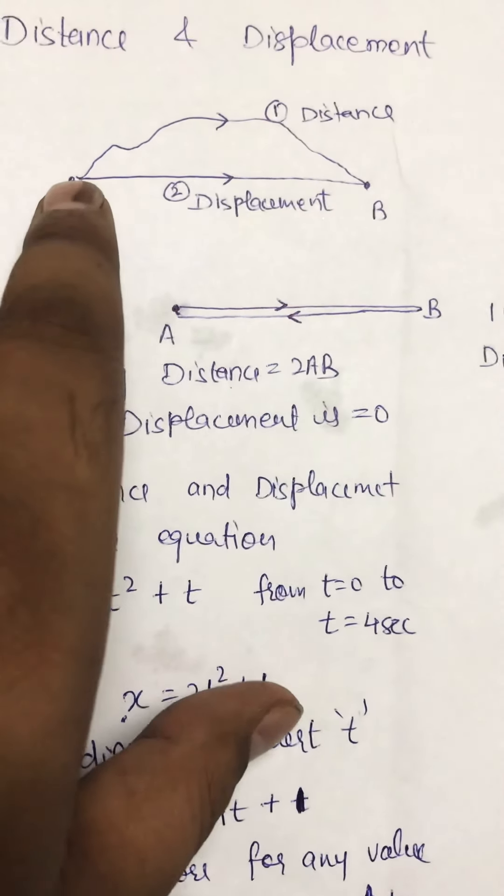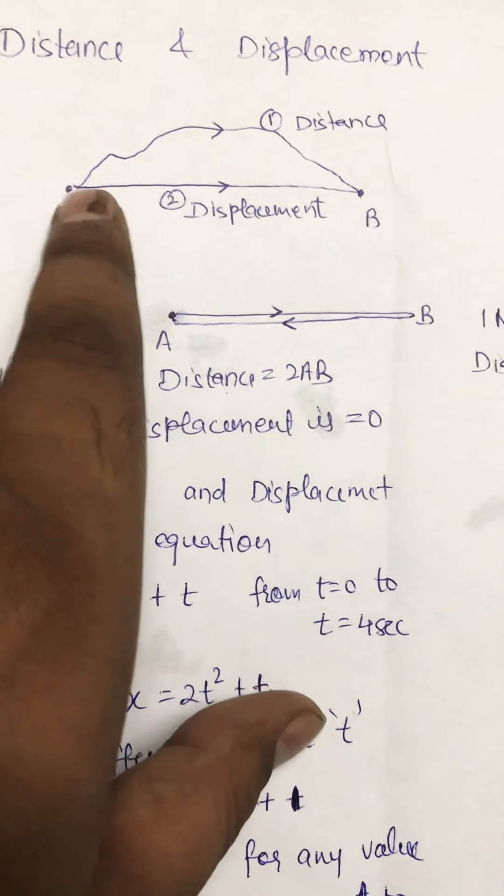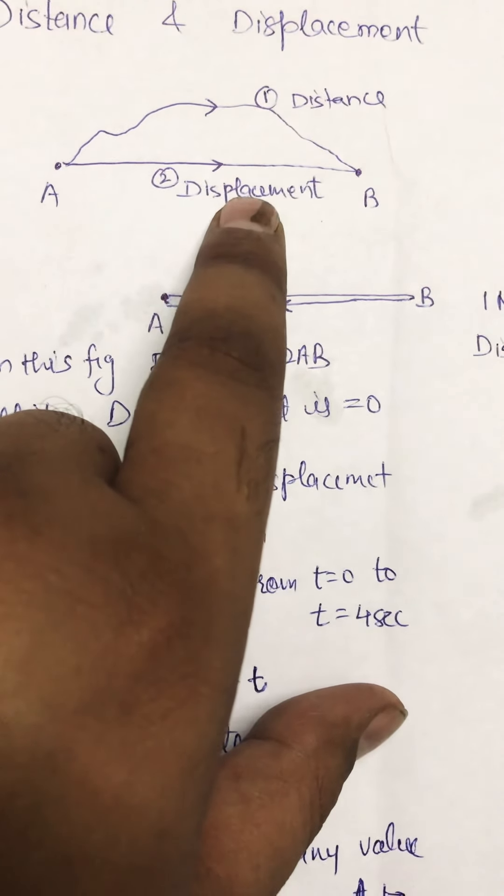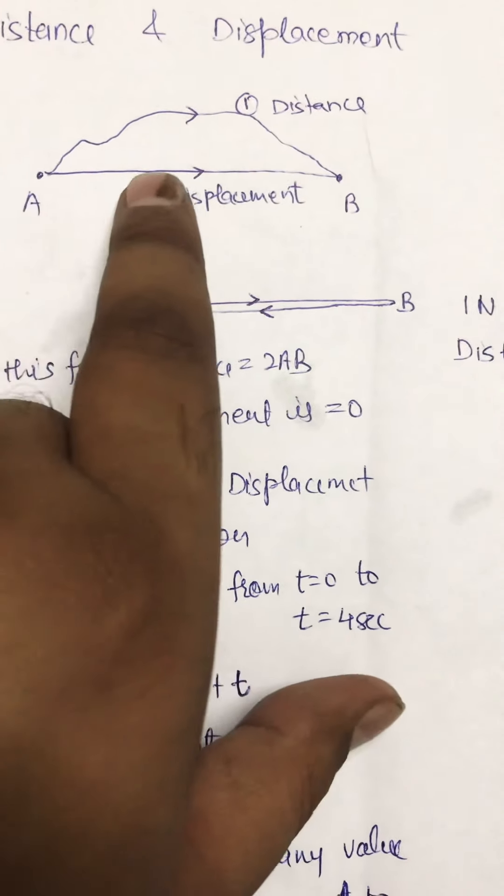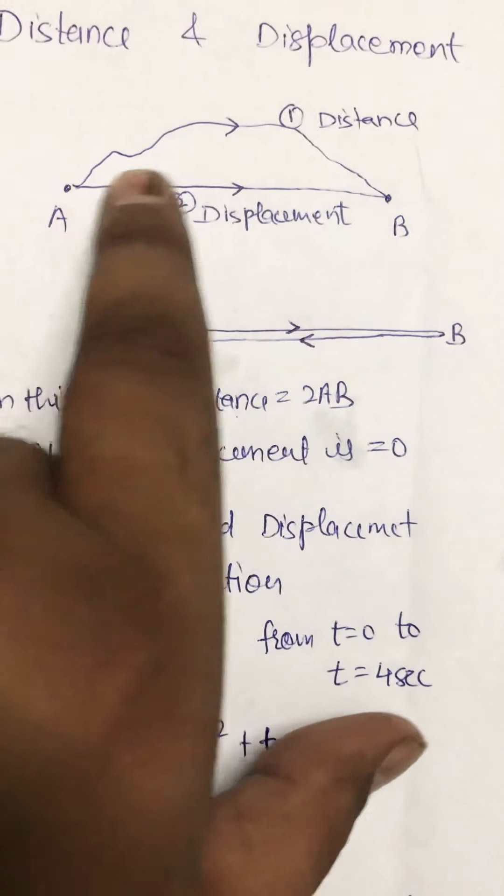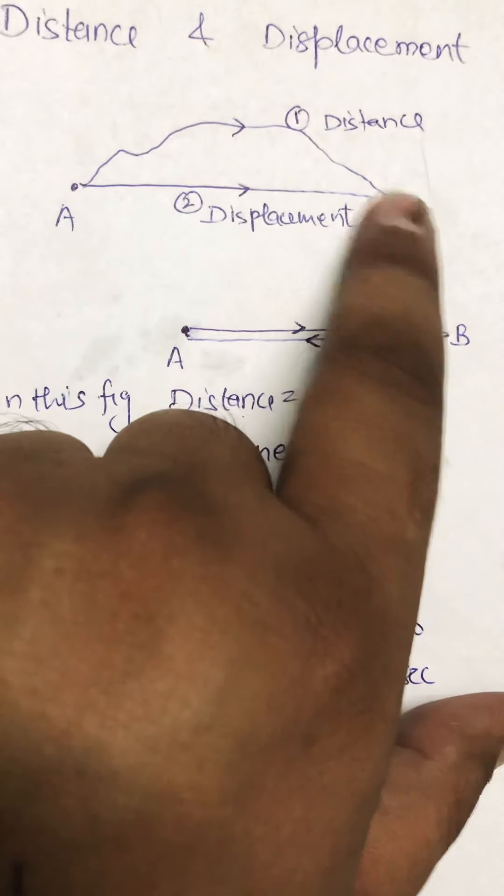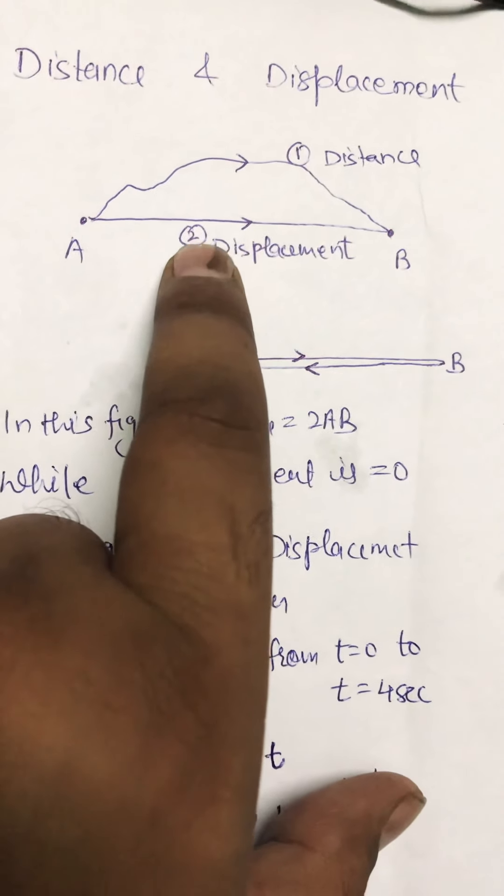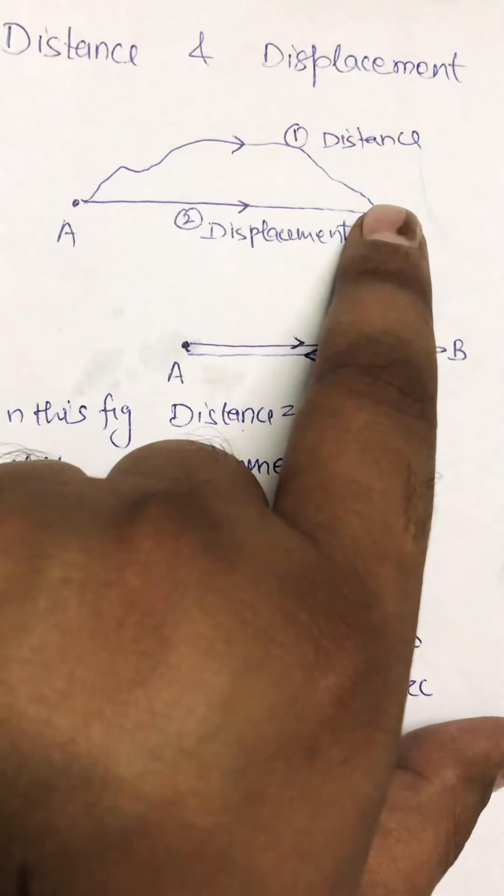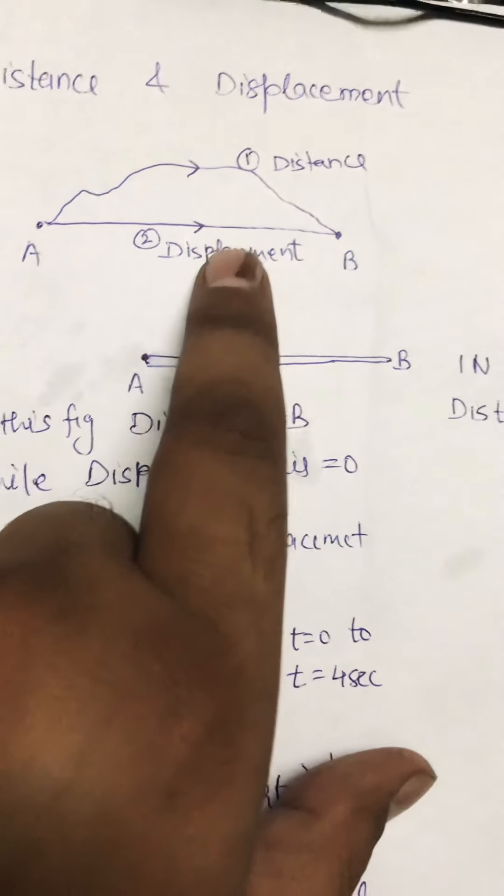While a body moves from A to B via path 2, this is known as displacement. This is basically the shortest distance between these two points, between points A and B. The shortest distance is represented by path 2, is known as displacement. This is also distance, but this is shortest distance, hence called displacement.